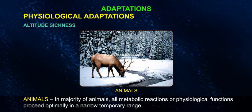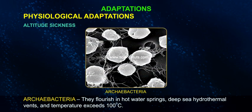In the majority of animals, all metabolic reactions and physiological functions proceed optimally within a narrow temperature range. Archebacteria, however, flourish in hot water springs and deep-sea hydrothermal vents where temperature exceeds 100 degrees centigrade.